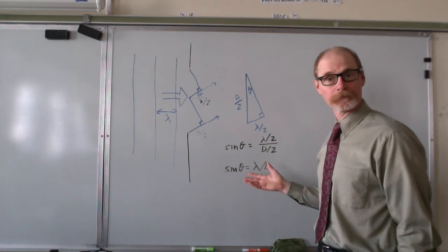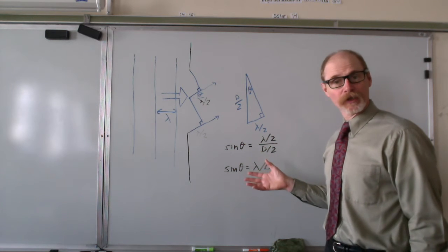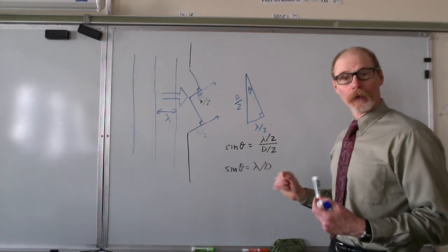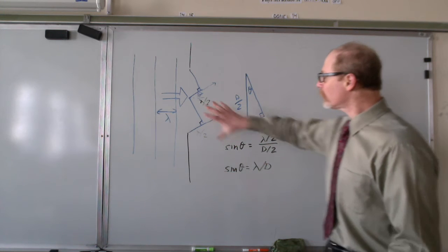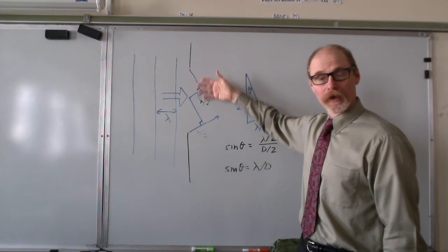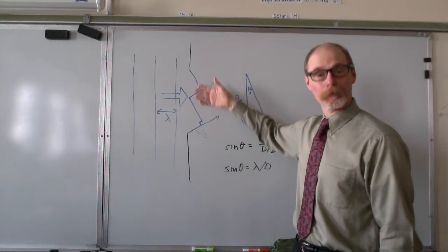That's for the first interference minimum. What about additional minimum? What about additional nodes at further angles? Well, the way we can do that is we'll just divide this up into succeeding even numbers of equal pieces.